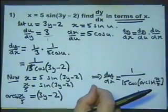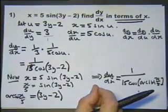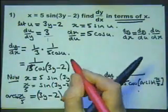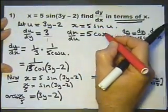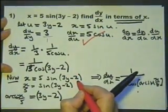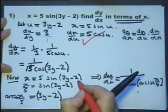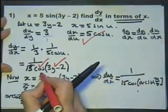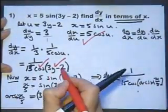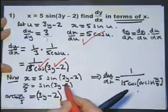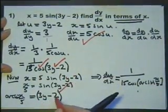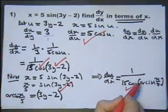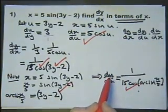That's question one finished. In the exam one would hope we know what we're doing and can work through a bit quicker. We'll have a mark for doing that differentiation, and a mark for ending up with the correct answer but not in terms of the correct variable. So if you stopped at the cosine of 3y minus 2 point you'd only get three marks. One mark for the chain rule work and one mark for substituting back to get the correct final answer. That's the end of question number one.